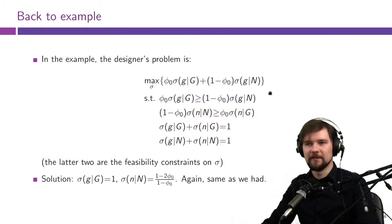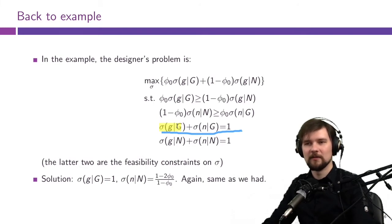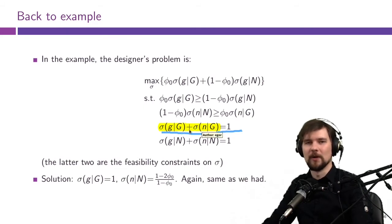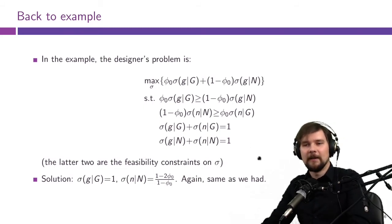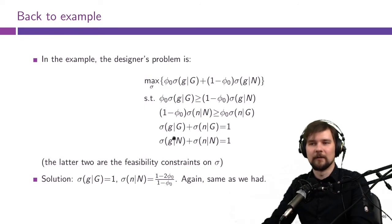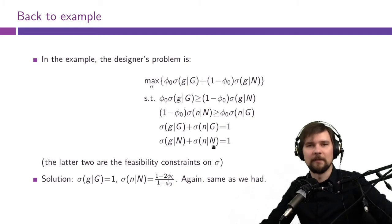Those are the two obedience constraints. The feasibility constraints require that in the guilty state, σ(g | G) + σ(n | G) = 1, and in the non-guilty state, σ(g | NG) + σ(n | NG) = 1 — one recommendation must always be issued. Additionally, all four σ values must be between zero and one. This complete problem can be fed into MATLAB, Python, Julia, R, or any other solver.